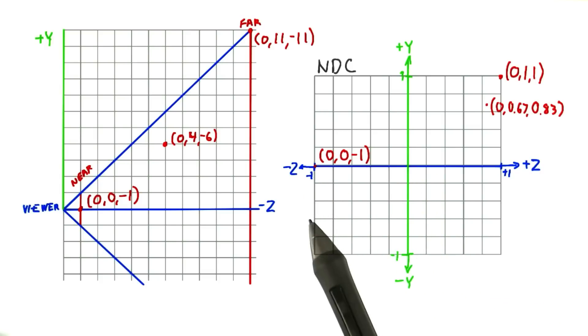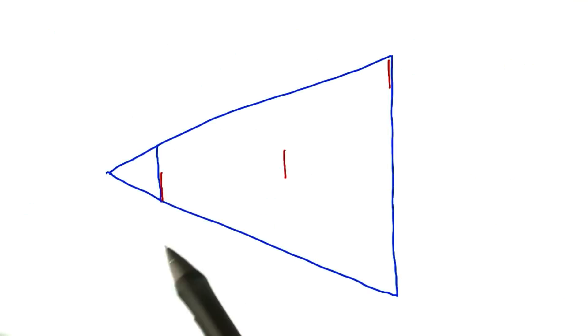Anything in the range negative 1 to 1 for x, y, and z is in the visible view volume. Let's take another example to show what happens to three objects that are the same size in world space, but at different distances.